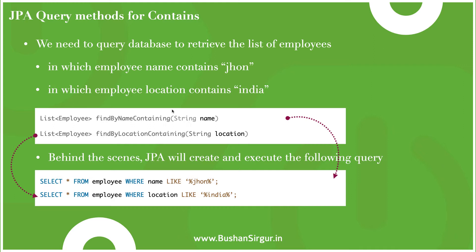we can create a JPA query method. Here is the query method for that: findByNameContaining — where 'name' is the field name and 'Containing' is a keyword — and we pass the parameter which is the keyword we need to find. Similarly, we can create a query method for location: findByLocationContaining, passing the location as the parameter.